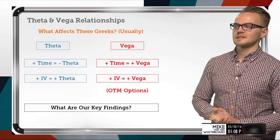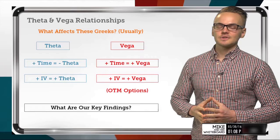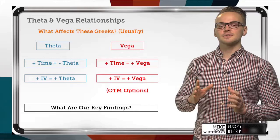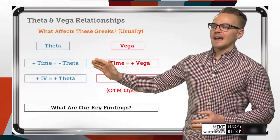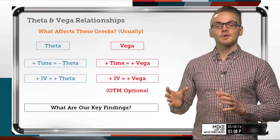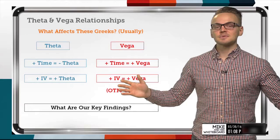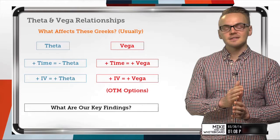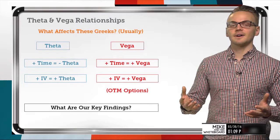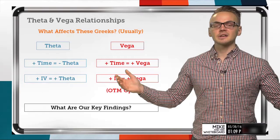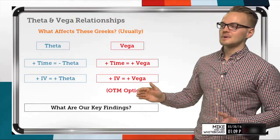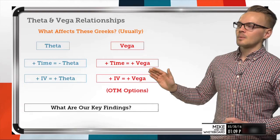Let's talk about things that change these greeks. When we look at theta specifically, if we add time to an option, theta actually tends to decrease. The option itself is worth more with added time, but the more time we add, the more slowly that option can decay. With a shorter time frame the option has to decay rapidly to reach zero by expiration, but an option with 180 days can decay very slowly — so we generally see theta go down when we add time.